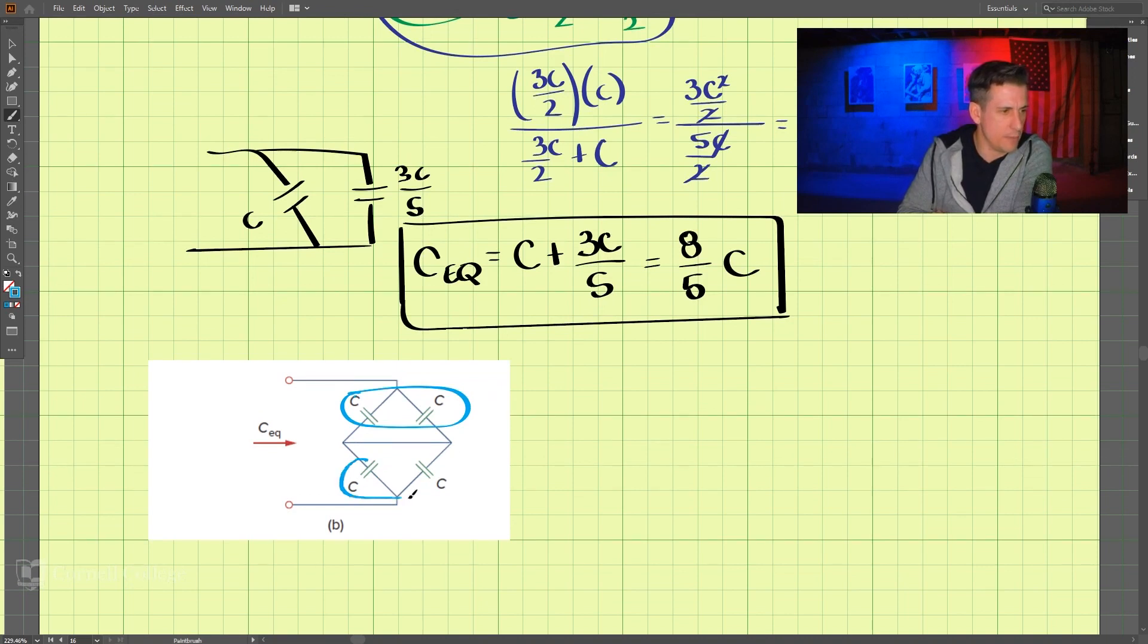And these should be in parallel. So those being in parallel, this comes out to be 2C up here, and this is 2C down here. Both these are in parallel. Let's redraw that circuit now. We have 2C here, and then we have another 2C here. These are in parallel.